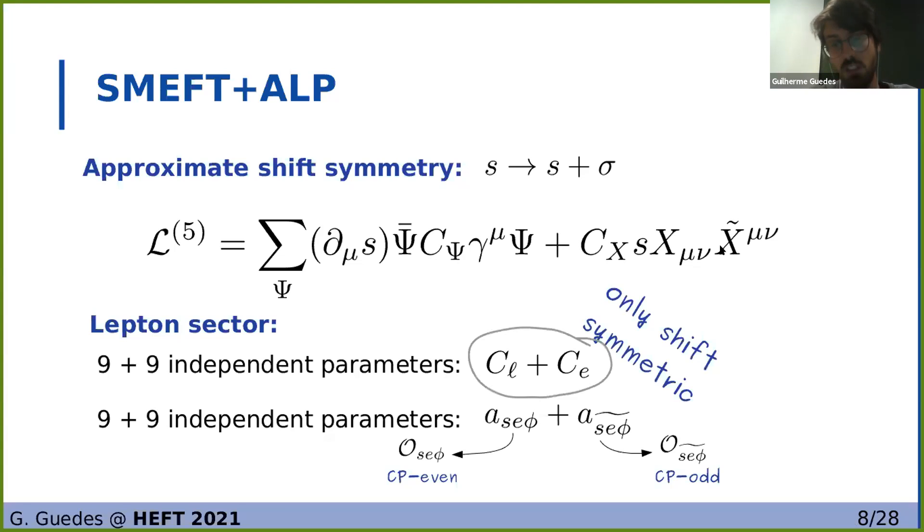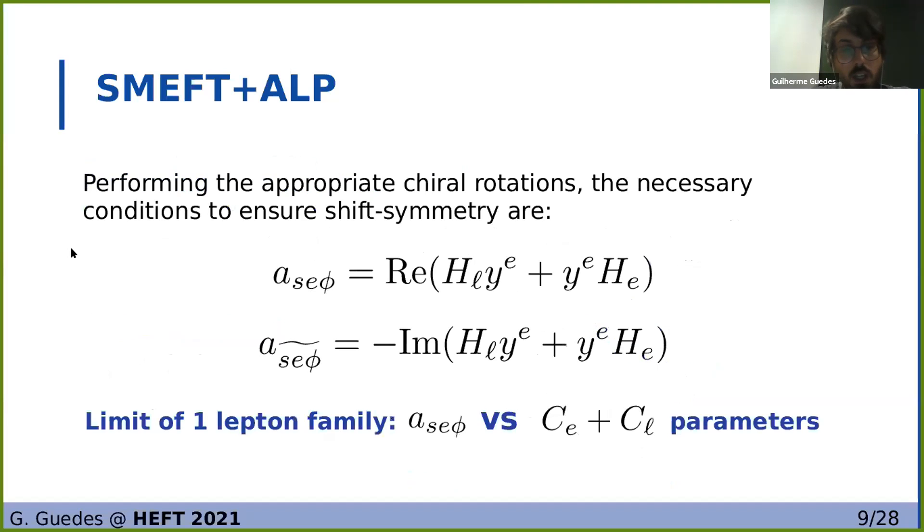However, by definition, the shift symmetric bases only describes shift symmetric operators, whereas Yukawa-like, so the Yukawa-like would seem that it is more general. It might seem strange that the Yukawa-like bases can also reproduce shift symmetry, but we show in the paper that performing the appropriate chiral rotations, we can get the necessary conditions under which shift symmetry is preserved, and we show here the conditions for the couplings, the CP-even coupling of the Yukawa-like operator, and for the CP-odd coupling. Here H are arbitrary Hermitian matrices.